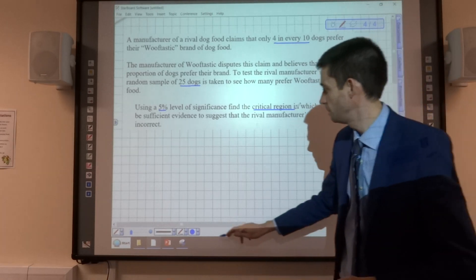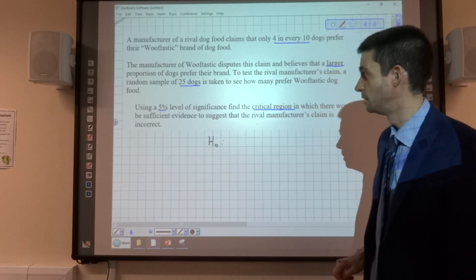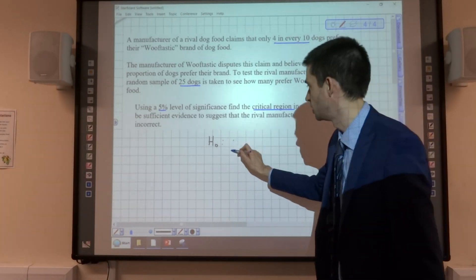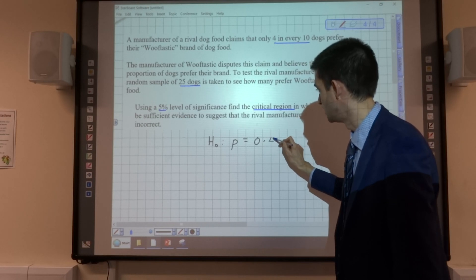So, the same situation is going to start off, though. We're going to write out our null hypothesis, which is that the probability is 0.4. We've got that kind of 4 in 10.